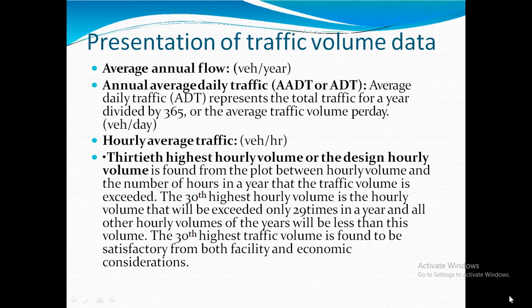The 30th highest hourly volume, or Design Hourly Volume (DHV), is found from a plot between hourly volume and the number of hours in a year that the traffic volume is exceeded. The 30th highest hourly volume is the hourly volume that will be exceeded only 29 times a year, and all other hourly volumes of the year will be less than this value. The 30th highest traffic volume is found to be satisfactory from both facility and environmental conservation standpoints — so we take the volume that is exceeded only 29 times as the design value.